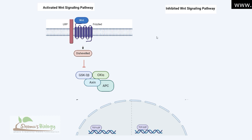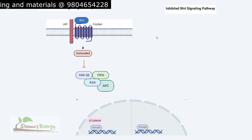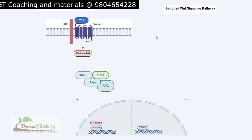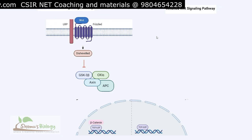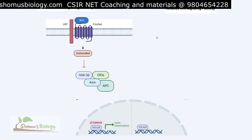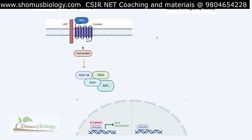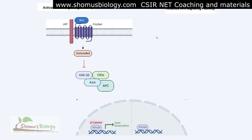The complex of GSK3-beta, CKI-alpha, Axin, and APC is inhibited by Disheveled. Because this complex is inhibited, beta-catenin remains free and can translocate into the nucleus. Inside the nucleus, beta-catenin interacts with TCF-LEF, and together they interact with DNA, causing gene transcription. This transcription leads to the activation and production of mRNA, which are the WNT response elements.